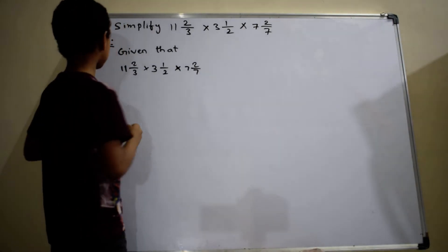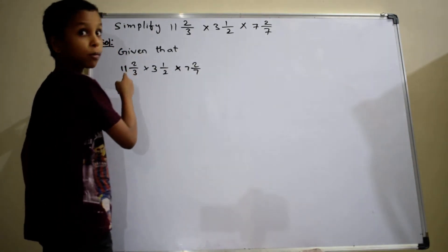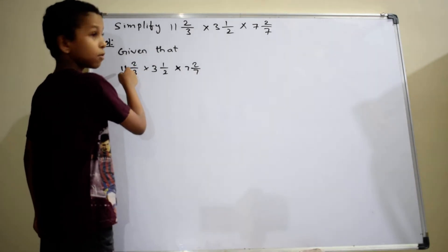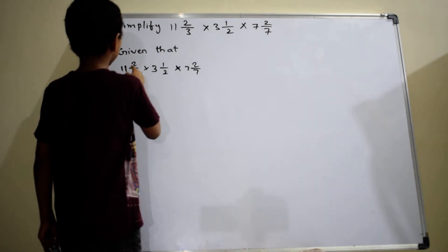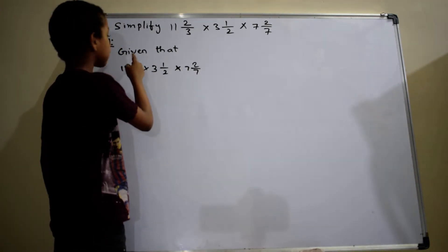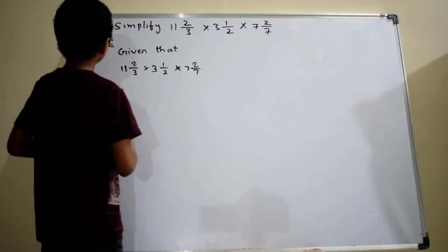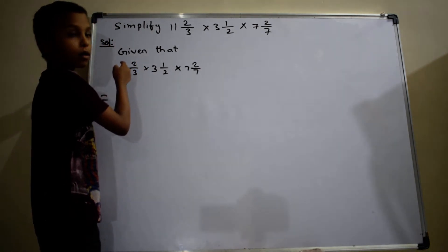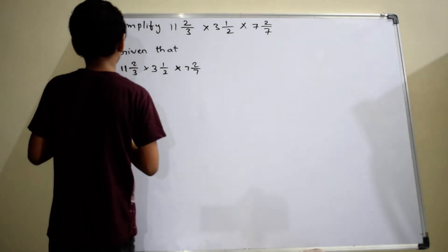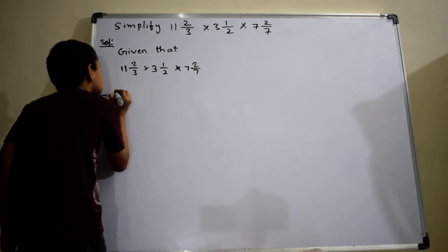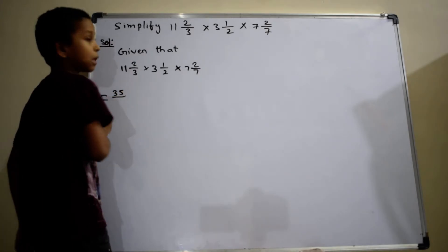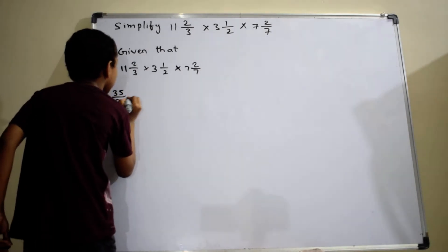We have to multiply denominator 3 with 11 and add with numerator 2, which is equal to 3 into 11, 33. 33 plus 2, which is equal to 35 by 3 into.